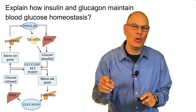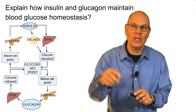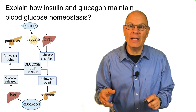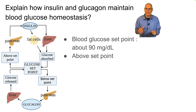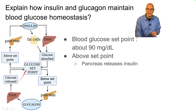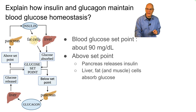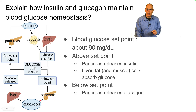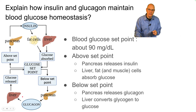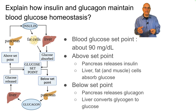Insulin is paired with another hormone, just like the home heating and cooling system. Blood glucose has a set point of about 90 milligrams per deciliter. Above the set point, the pancreas releases insulin; after eating a big meal, liver, fat, and muscle cells absorb glucose and store it as glycogen. Below the set point — when you've gone a while without eating — the pancreas releases a second hormone called glucagon, which induces the liver to convert its glycogen stores back into glucose. Glucose enters the blood and homeostasis is restored.